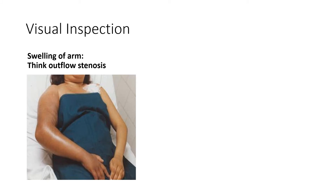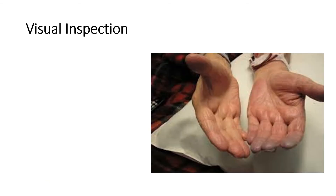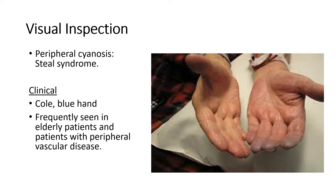If you see swelling of the arm, think outflow stenosis — a problem with drainage of blood from the arm due to narrowing of the fistula outflow vein. If you see a bunch of collateral veins, think central stenosis — one of the veins in the chest is obstructed, making it harder for blood to drain from the arm. Look also for evidence of steal syndrome, clinically manifest as a cold, blue hand, more common with an upper arm fistula and in elderly patients with peripheral vascular disease.